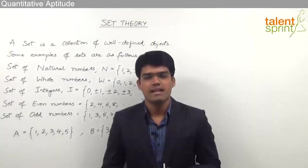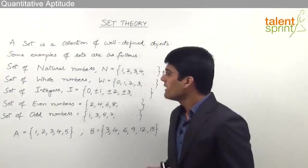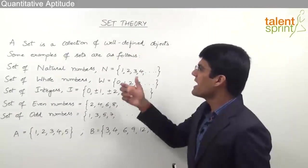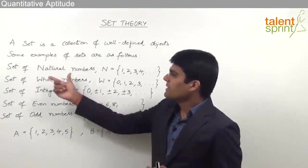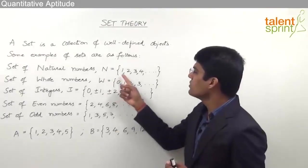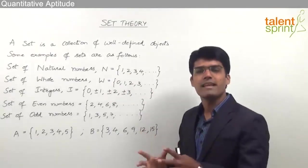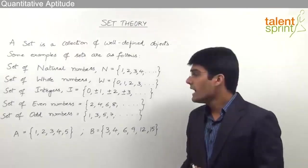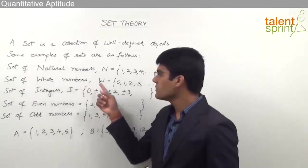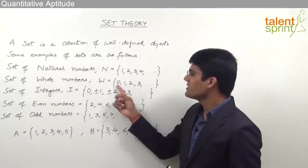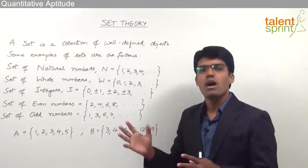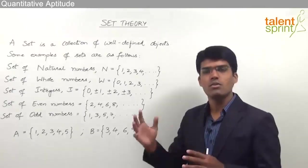Let us first understand what are some examples of sets. A set is a collection of well-defined objects. For example, the set of natural numbers is denoted by N, which includes 1, 2, 3, 4 up to infinity. Each of these numbers is called an element of the set. Likewise, the set of whole numbers, denoted by W, has the elements 0, 1, 2, 3 up to infinity.